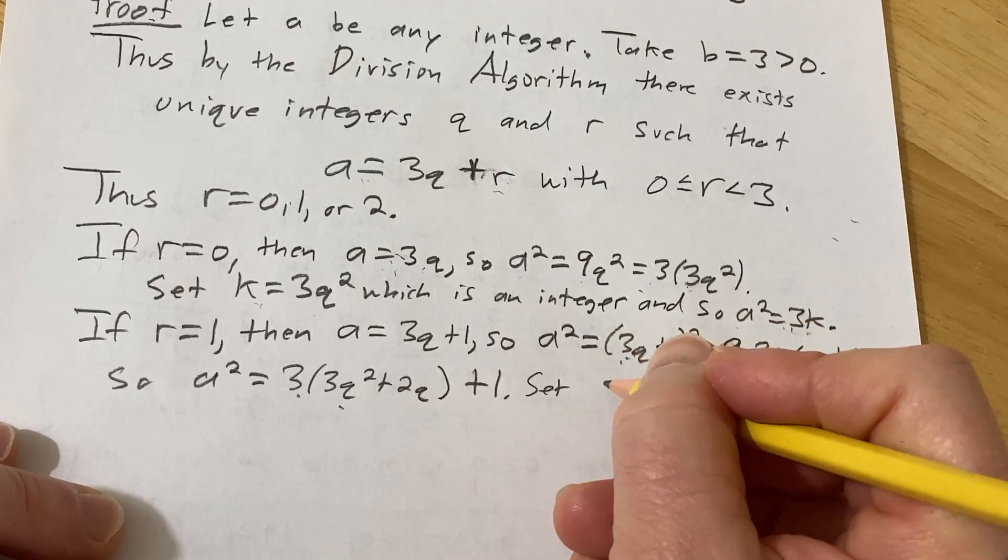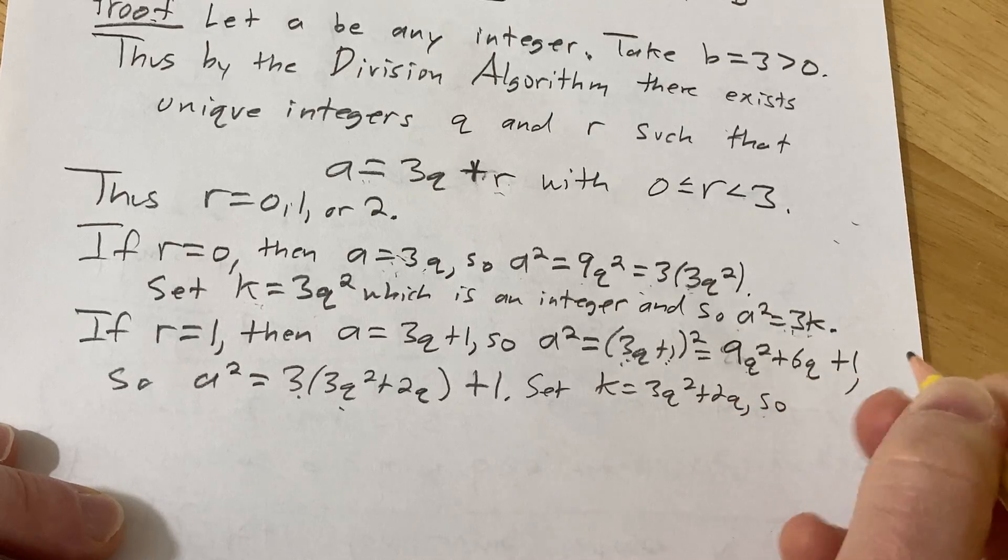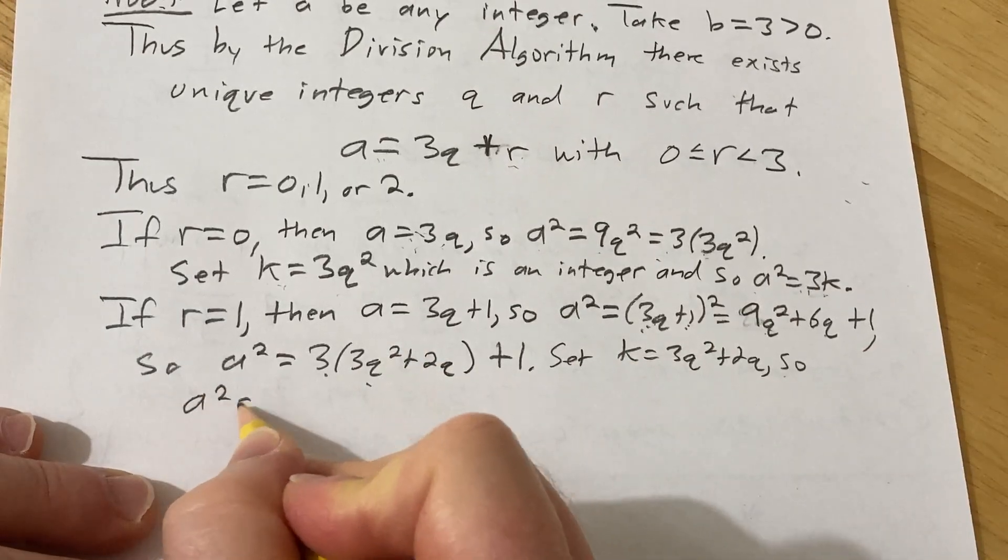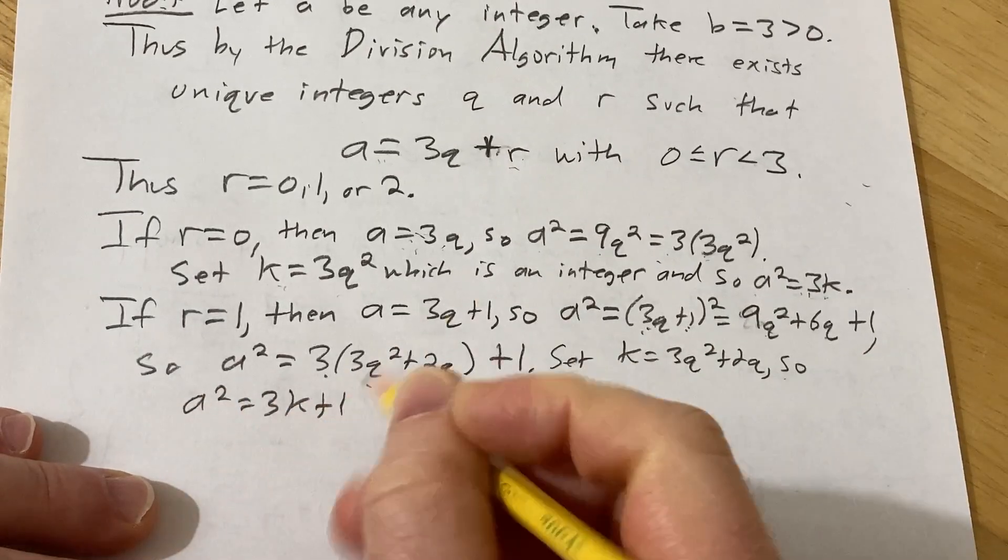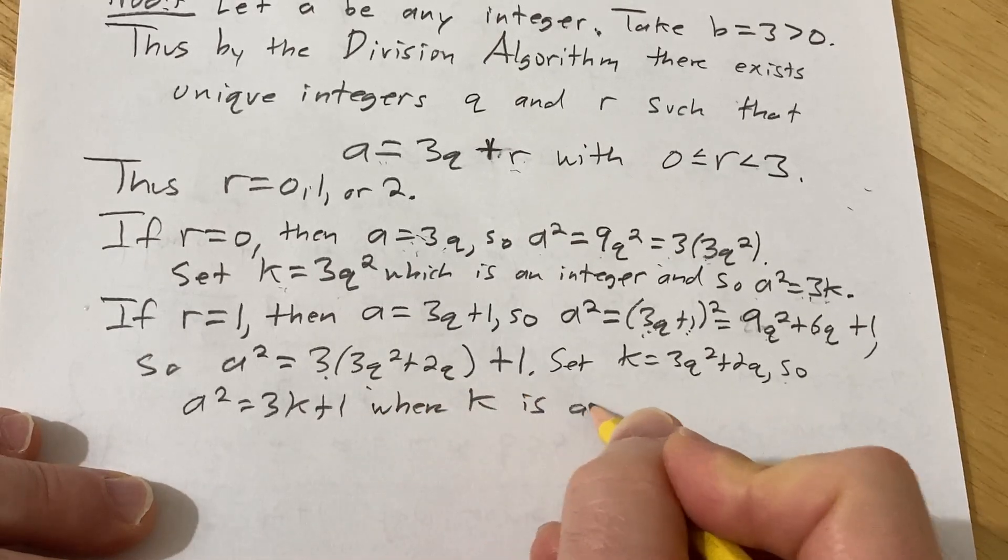So set k equal to 3q squared plus 2q. So a squared is equal to 3k plus 1.